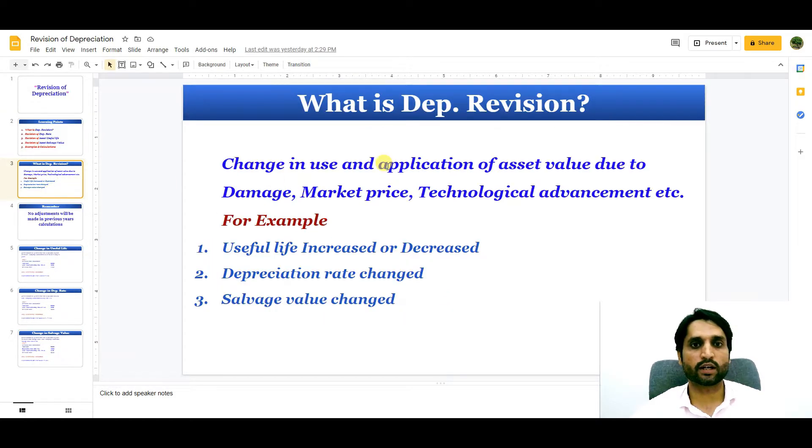Let's move and we will see what is depreciation revision. So change in use and application of asset value due to damage, marketplace fluctuations, technological advancement, etc. For example, the useful life increased or decreased, depreciation rate changed, salvage value changed. So these are the factors involved when we need to revise our depreciation schedule or depreciation estimates.